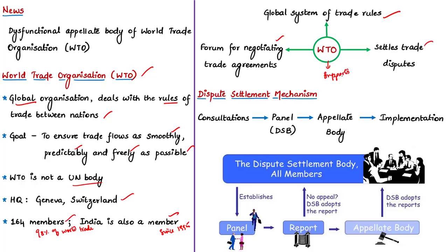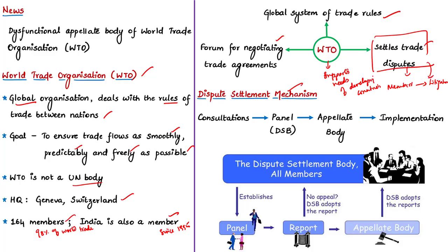WTO also settles trade disputes between its members. Whenever there is a trade dispute among WTO members, they can file litigation in the WTO, and it goes through the dispute settlement mechanism. The dispute settlement process involves different stages: consultations, then establishment of a panel by the dispute settlement body, then if required, appeal in the appellate body against the report given by the panel, and finally the implementation of the final report.